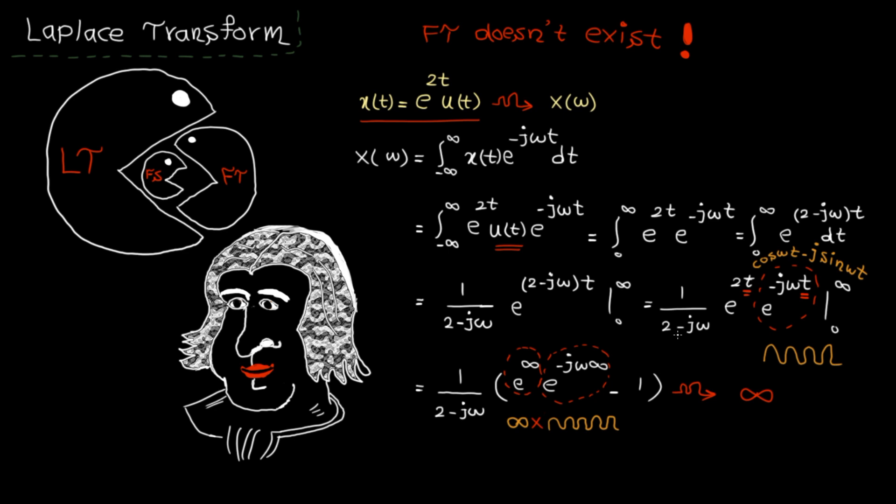Before I continue, I want to mention that sometimes Fourier transform is shown by X(jω), not X(ω). They are exactly the same but just different notation. For this chapter, I'm going to use X(jω), and soon you will understand why.